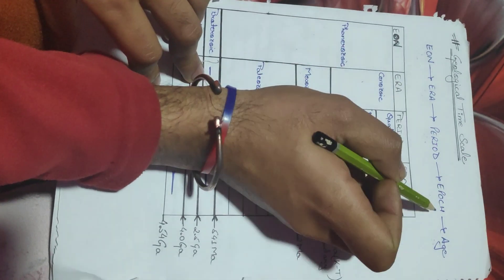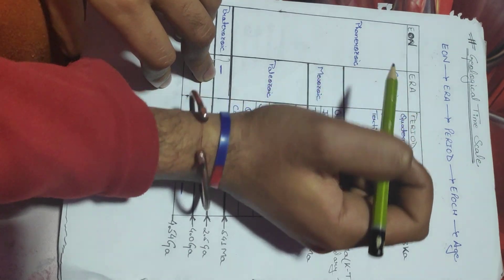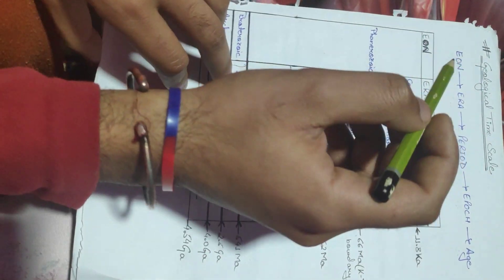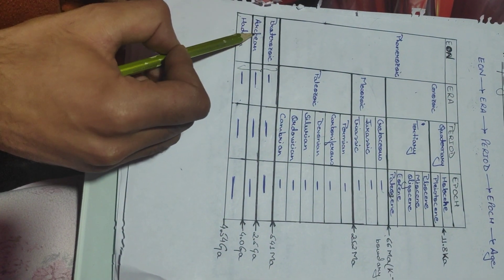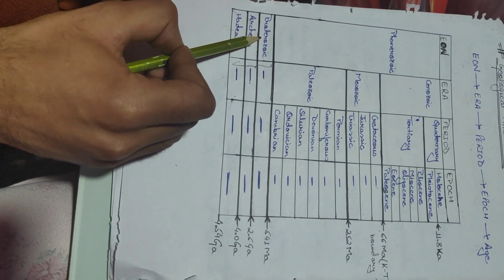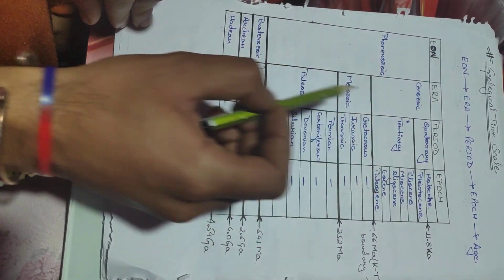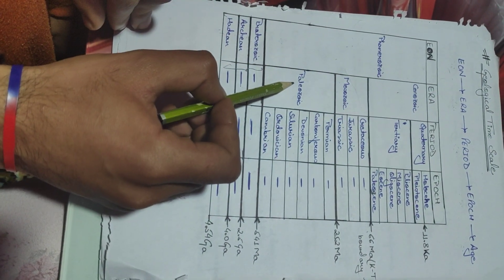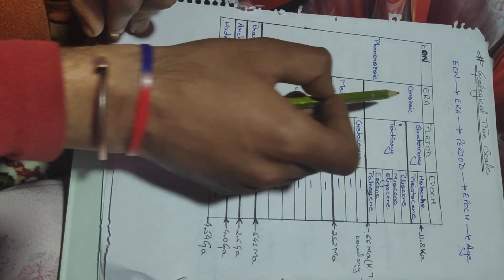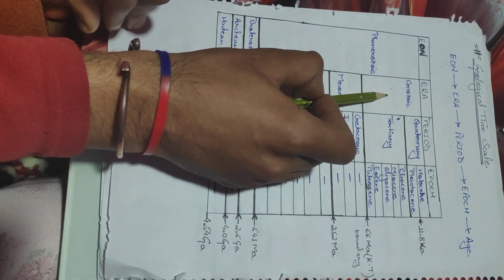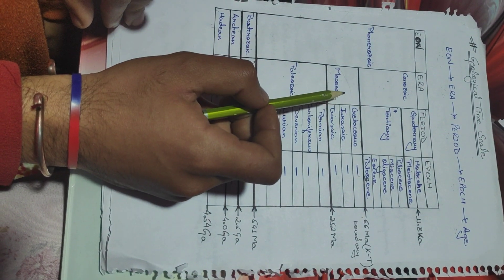All these divisions are further divided into many different parts. Eon is divided into Hadean, Archean, Proterozoic, and Phanerozoic. Similarly, Era is divided into Paleozoic, Mesozoic, and Cenozoic, and Period and Epoch are likewise divided.